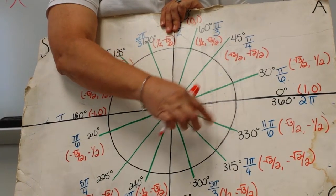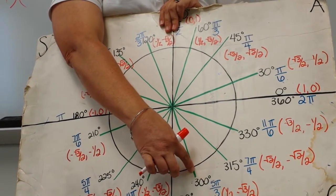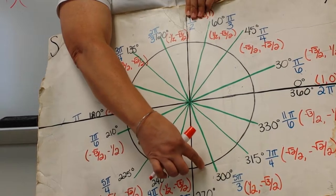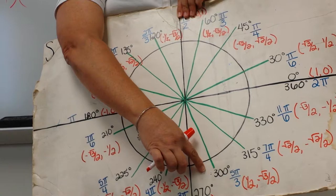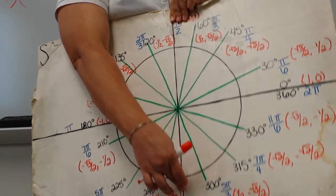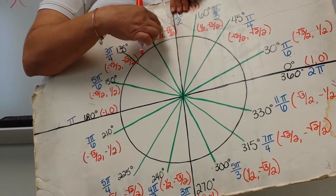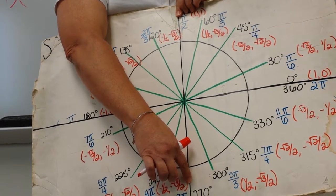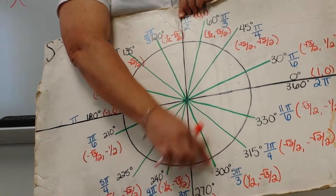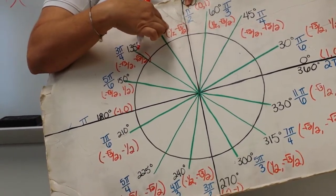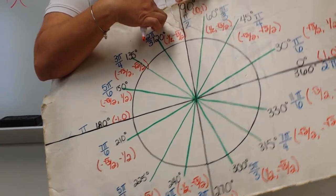Thinking about it: negative 76 is in the fourth quadrant, 76-ish degrees from the 360-degree line. The closest reference line is 90 degrees. It's about 14 degrees from 90. So 90 plus that 14-ish is approximately 104 degrees. The answer is 104.4.